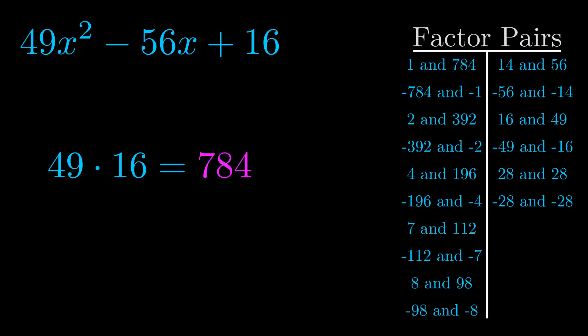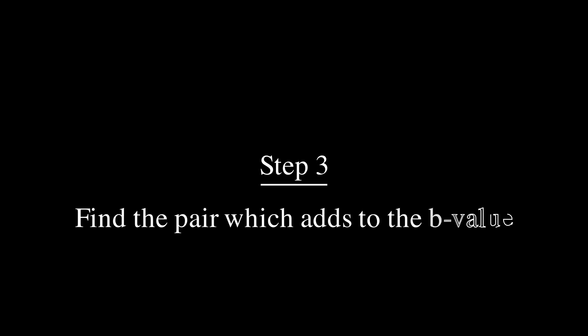Now once you have these factor pairs the goal is to find which of these pairs adds to the b value. The b value is the coefficient on the x term.